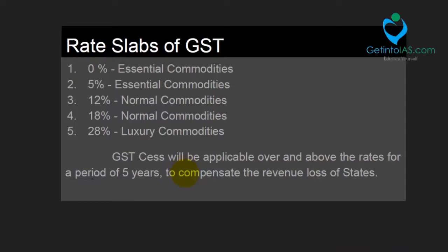There are many rate slabs for GST. There are five slabs: 0, 5, 12, 18, and 28 percent. The 0 and 5 percent slabs apply to essential goods like normal daily-use goods. The 12 and 18 percent slabs apply to normal commodities. And 28 percent is for luxury goods like tobacco, cars, and similar items. Also, when GST is implemented, the states will face a huge revenue loss. To compensate for that, something called GST Cess will be applied over and above the rates for a period of 5 years, applicable on the 28 percent slab. The money collected will be given to the states as compensation.